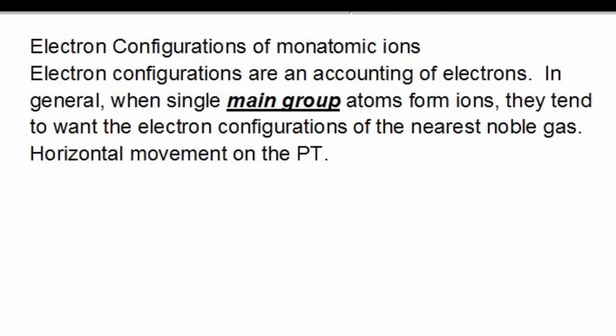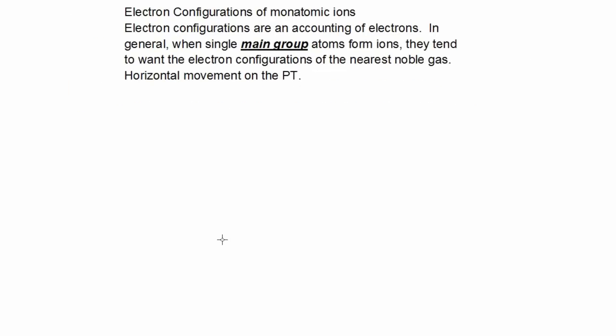We'll look at electron configurations of monatomic ions. Electron configurations are an accounting of electrons. In general, when single main group atoms form ions, they tend to want electron configurations of their nearest noble gas. This is a horizontal movement on the periodic table. I want to emphasize main group atoms.